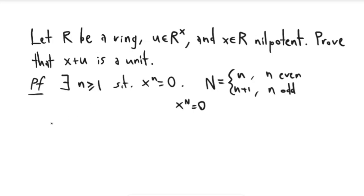But now we want to consider x plus u, and our trick is that we want to multiply this by the following expression. So we want to multiply this by x to the big n minus 1 minus x to the big n minus 2u plus dot dot dot.